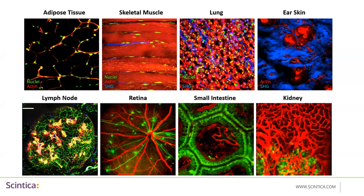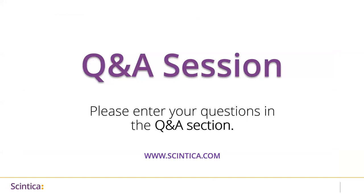I want to end today's demo presentation with this slide which shows how we are capable of imaging almost every organ or tissue in an animal's body — adipose tissue, skeletal muscle, lung, ear skin, lymph nodes, retina, small intestine, kidney, and many others. You just need to design your experiment and come up with your research question; this instrument will help you look at every organ or tissue at the single cell level resolution. Thank you everyone for attending today's session; I'll now hand it over to Gabriel to moderate the Q&A session.